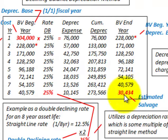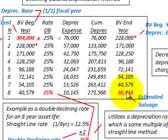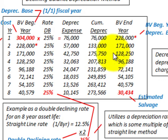At the end of our eighth year, we have $30,434 still undepreciated. We had estimated a salvage value of $16,000, but we ended up with $30,434 remaining — so that becomes our new estimated salvage value. You can use various methods, such as switching to the straight-line method, to use up this remaining depreciation amount. You can also see that the depreciation charge decreases as we move through the years.